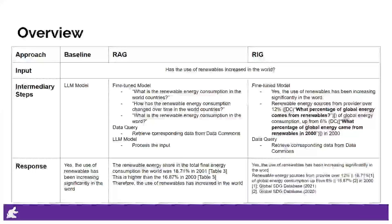On the other hand, RAG takes a more refined approach by generating detailed natural language questions that are specifically designed to be answered by data commons. Once these questions are produced, they are incorporated into prompts that guide the model in generating the final response. This method enables RAG to provide responses that are not only accurate but also contextually relevant, as the questions are closely aligned with the statistical data being retrieved.